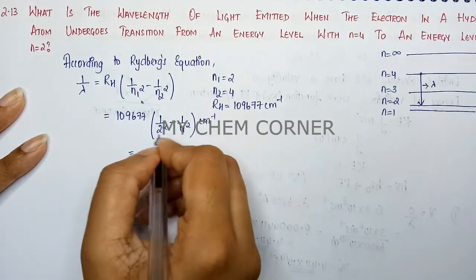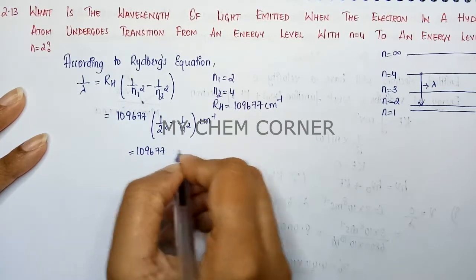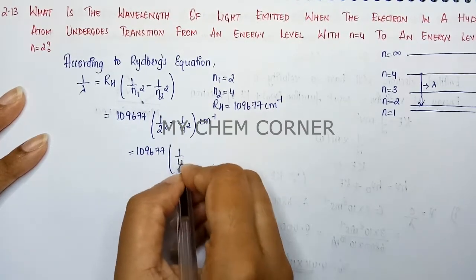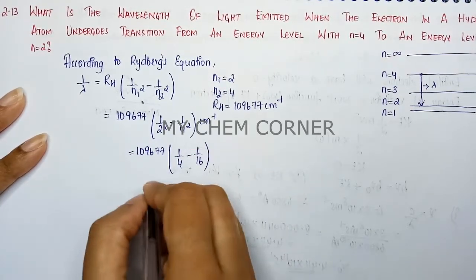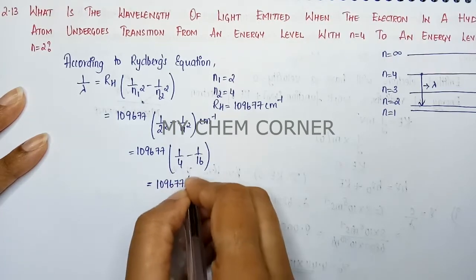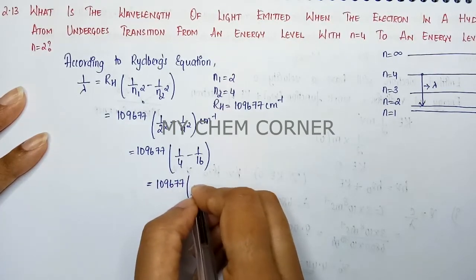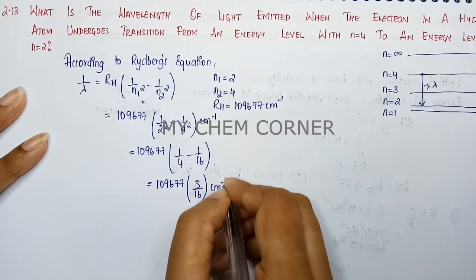When we take the square and do the LCM, this will become 1/4 minus 1/16. When we do the LCM it will become 109,677 into 3/16 cm⁻¹.